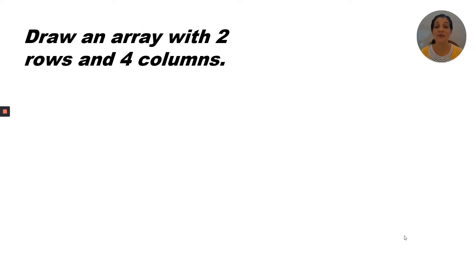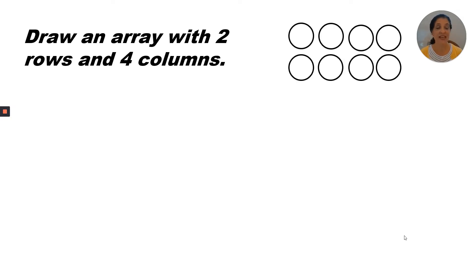Draw an array with two rows and four columns. It should look like this. I have two rows and four in each row. Remember, a row goes from side to side and the column goes up and down.